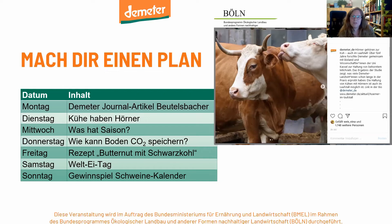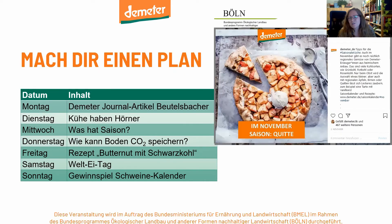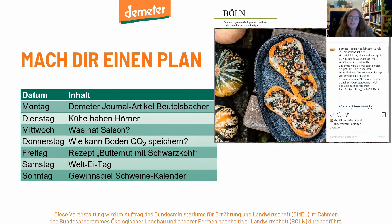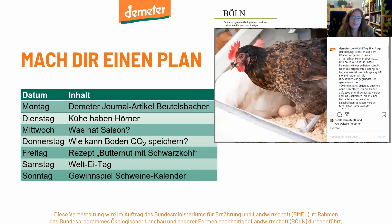Als Beispiel aus unserem Kalender: wir haben den Beutelsbacher-Post gemacht. Am Dienstag könnte man einen Post zu Kühen und Hörnern im Laufstall machen. Eine schöne Möglichkeit ist auch, saisonale Inhalte zu kombinieren – zum Beispiel ein Rezept für Quitten im November – oder eine Illustration, wie Boden CO2 speichert. Bestimmte Tage eignen sich auch gut als Anlass: der Welteitag, der Milchtag, oder sogar der Tag des deutschen Butterbrots – solche Tage geben gute Anhaltspunkte, wenn man nicht weiß, worüber man posten soll.